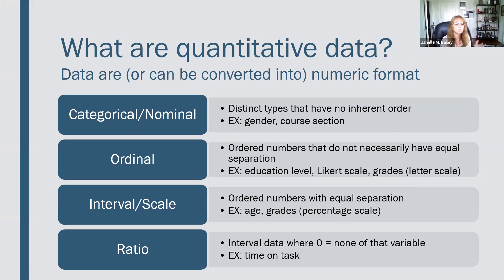Categorical data are distinct categories or types that have no inherent order — there's not one that's better or bigger or more intense than the others. For example, gender — male, female, non-binary — those are not ordered numbers; they don't have one being better than another. You could assign numbers to them, but that doesn't mean anything. Course section is another example: you distinguish between which course section you're talking about, but they don't necessarily have meaning in terms of the research question.